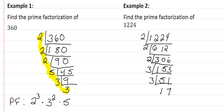17 is a prime number, so that tells me that I'm done. And all of these are my prime factorization. So my prime factorization for this number is 2 cubed times 3 squared times 17.